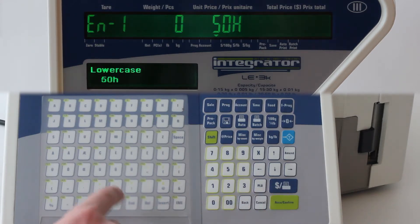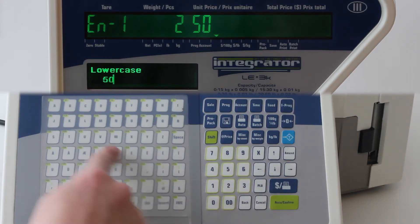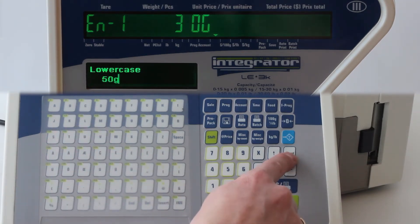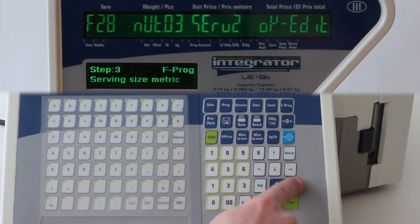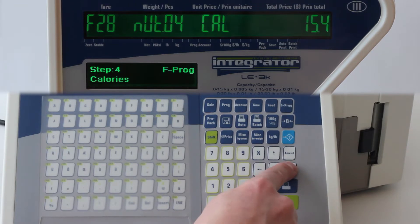Press AccuConfirm to define the measuring size. As an example we used 50 grams. Press amend to confirm. Press the right arrow key to proceed to the next step.